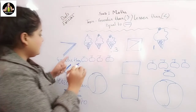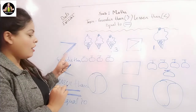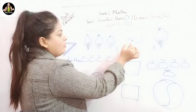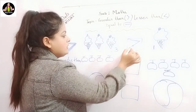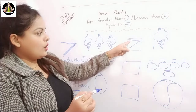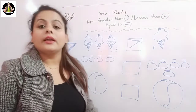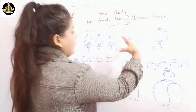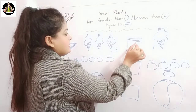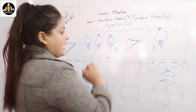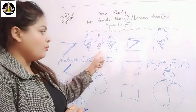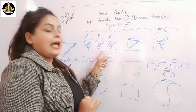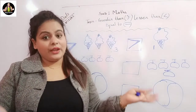So here we can see this is the sign of greater than. The alligator will open his mouth towards this side. This is the sign of greater than — see how the alligator opens his mouth towards this side and eats all three ice creams.